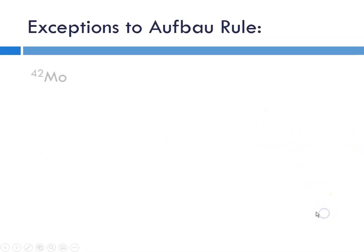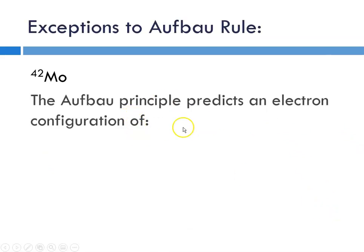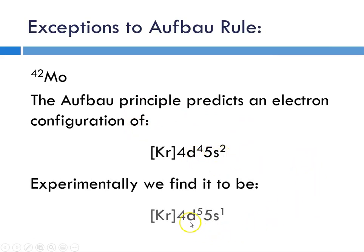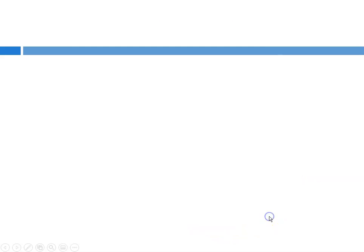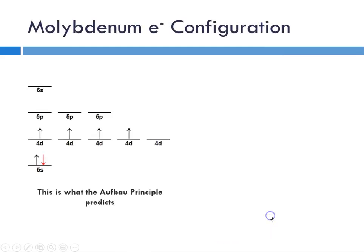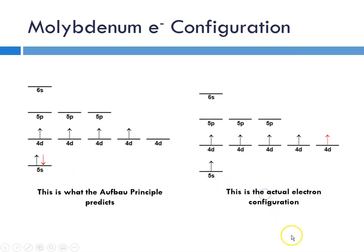And finally, molybdenum. The Aufbau principle predicts the configuration of 4d4 5s2. Experimentally, what we see is 4d5 5s1. This is what Aufbau predicts: the full s sublevel. What actually happens is only one electron in the s sublevel. So again, instead of 5s2, we get 5s1 and 4d5.